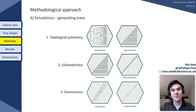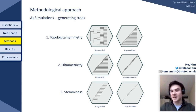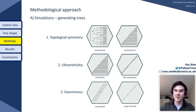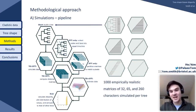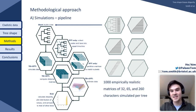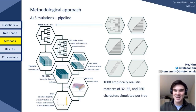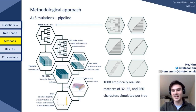To answer this question, we've adopted a two-pronged approach. First, we simulate data by creating a series of generating trees that contrast in specific aspects of tree shape: the first pair contrasts in symmetry, the second pair in ultrametricity, and the third pair in stemminess. We simulated binary discrete character data along these trees under an equal-rates MK model. All characters were simulated independently and concatenated into 32, 65, and 260 character matrices. A thousand of each were simulated for each generating tree — 3,000 matrices per generating tree.